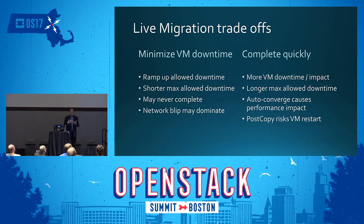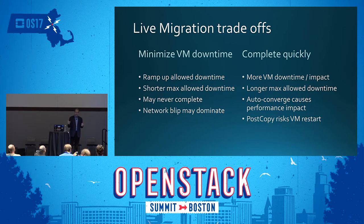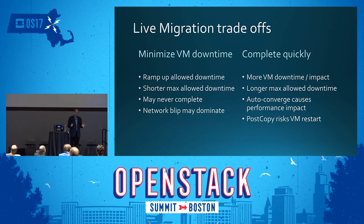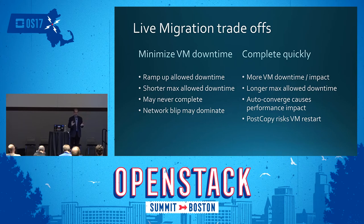One of the things Nova does is ramp up the allowed downtime. There's a configuration that says this is the maximum allowed downtime for the whole migration — the default is about 500 milliseconds. Many operators find they want to increase that to 1,000 to get a better completion rate. Rather than starting at 500, Nova slowly ramps that up over time so there's more chance of the VM completing with a very small pause.